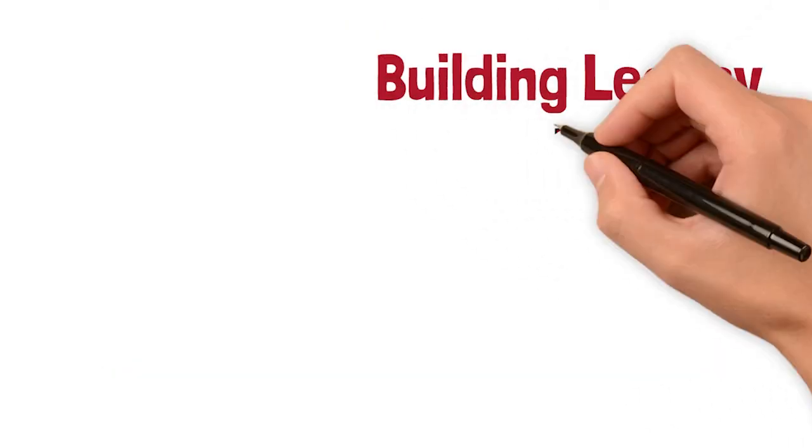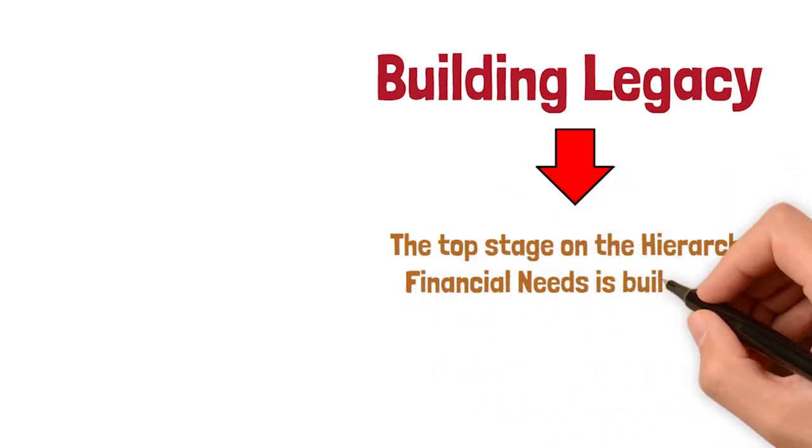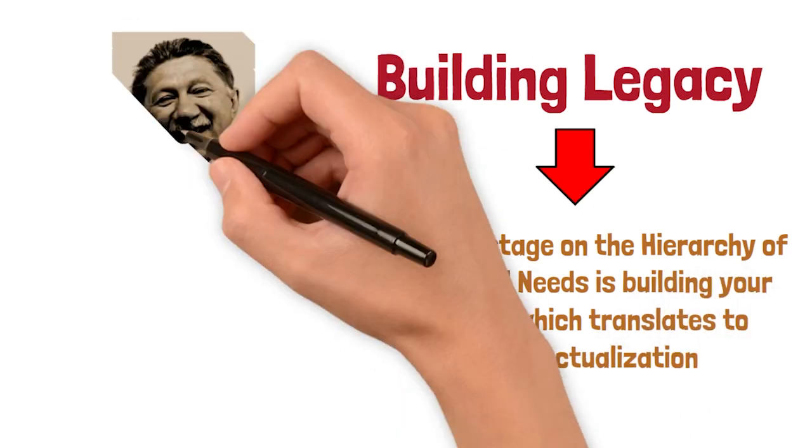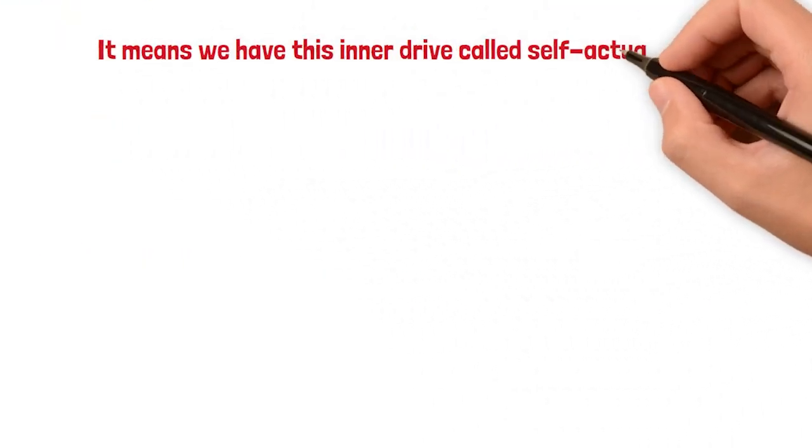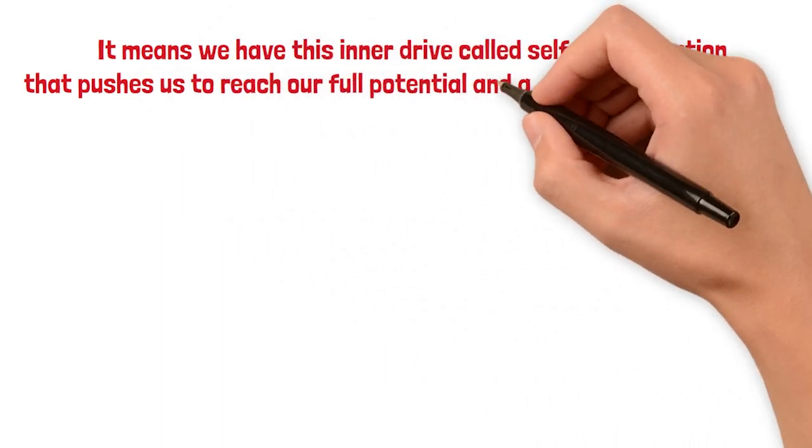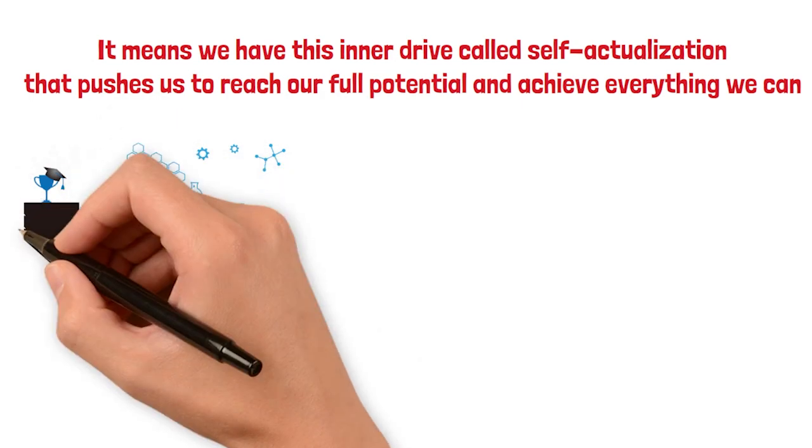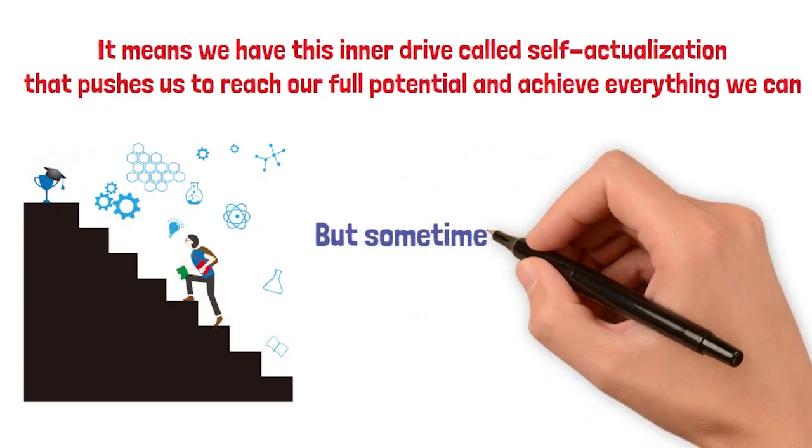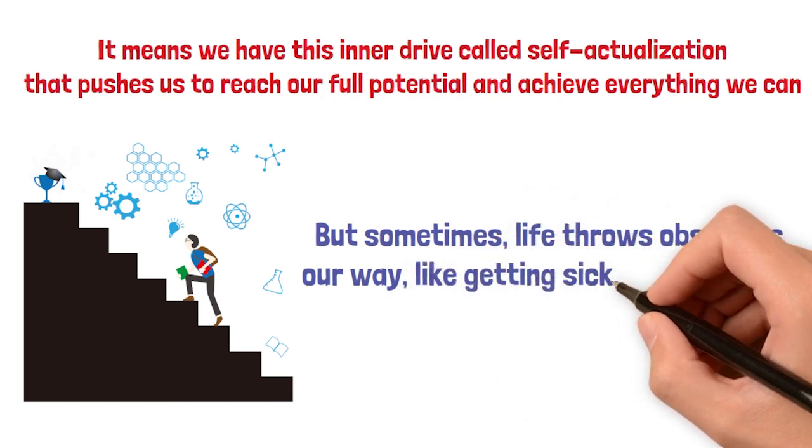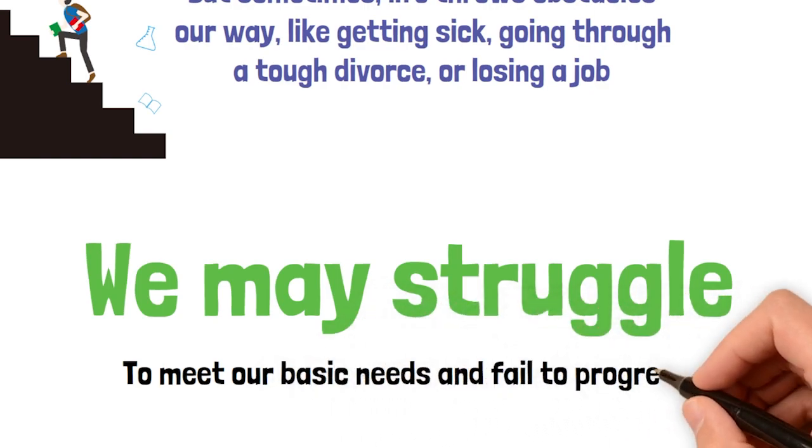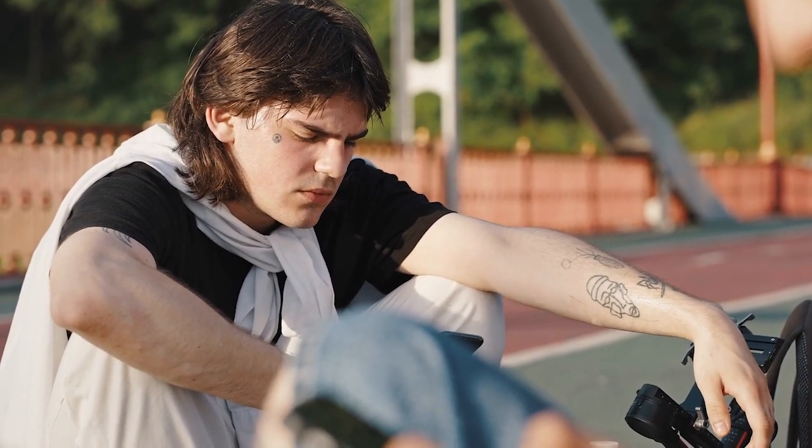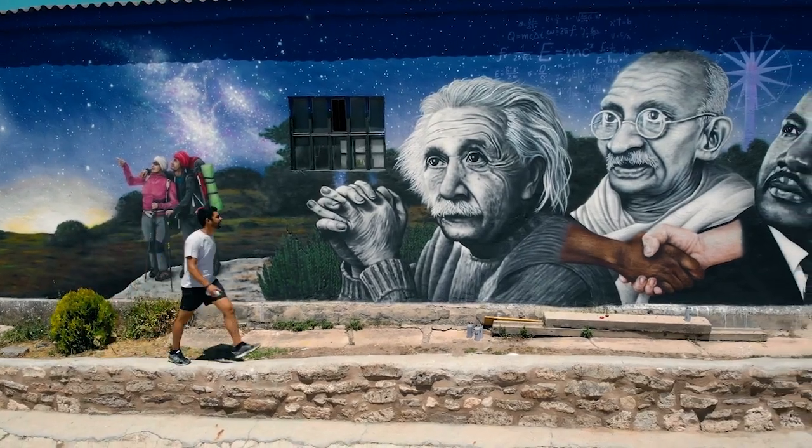Building legacy. The top stage on the hierarchy of financial needs is building your legacy, which translates to self-actualization. Maslow, in his book Motivation and Personality, said, 'What a man can be, he must be.' It means we have this inner drive called self-actualization that pushes us to reach our full potential and achieve everything we can. Everyone has the ability and desire to move up in life, aiming for self-actualization. But sometimes life throws obstacles our way, like getting sick, going through a tough divorce, or losing a job. We may struggle to meet our basic needs and fail to progress. Maslow thought only 2% of people would truly reach self-actualization. He gave examples of self-actualized individuals like Abraham Lincoln, Albert Einstein, Gandhi, and others.